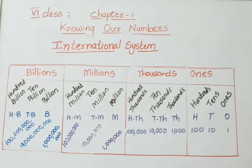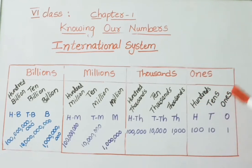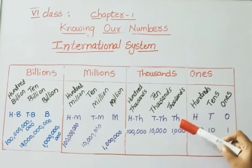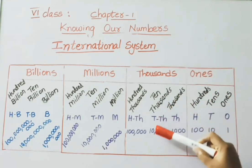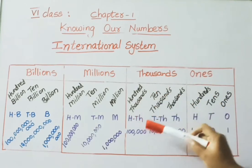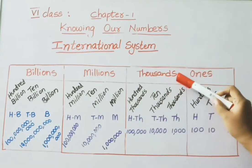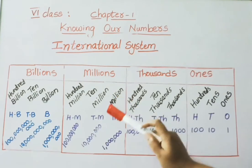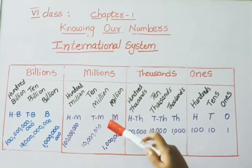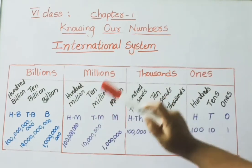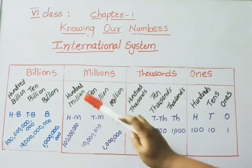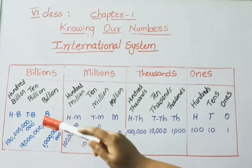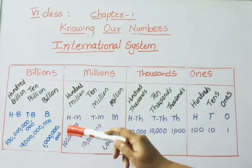In the International System: ones, tens, hundreds come under the ones period; thousands, ten thousands, hundred thousands come under the thousands period; million, ten million, hundred million come under the millions period; billion, ten billion, hundred billion come under the billions period.